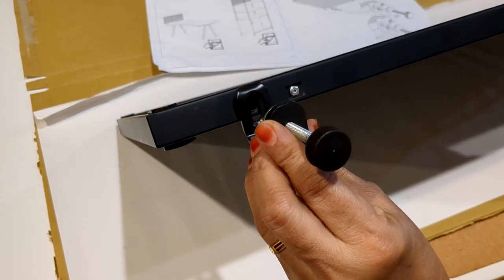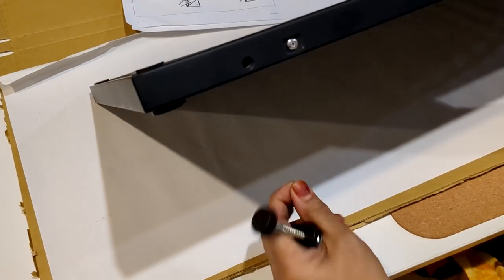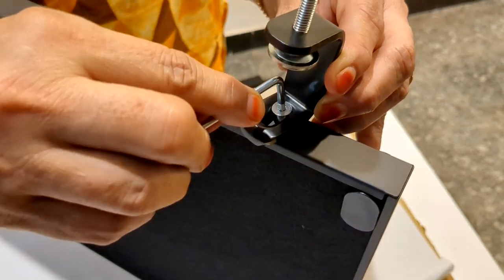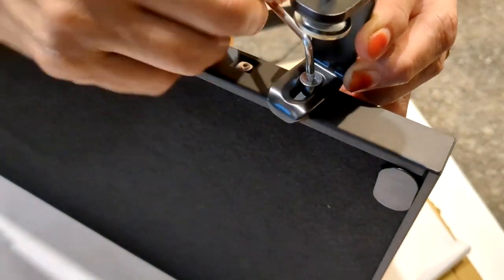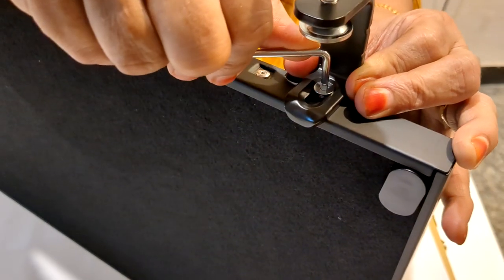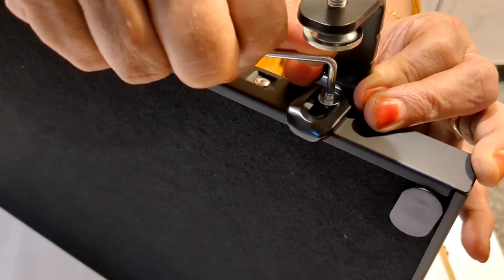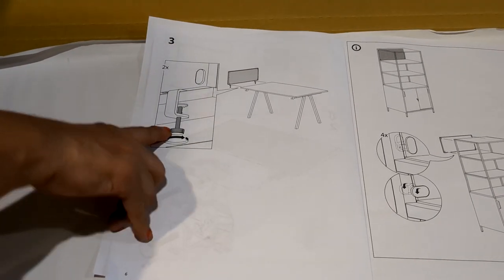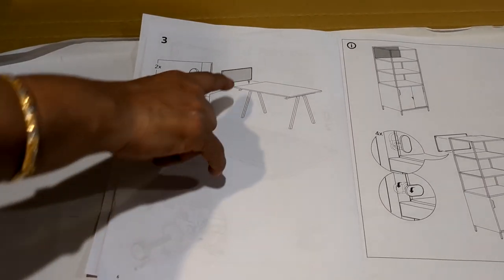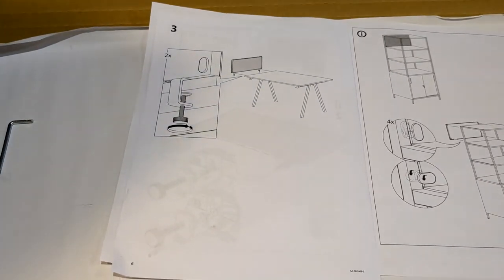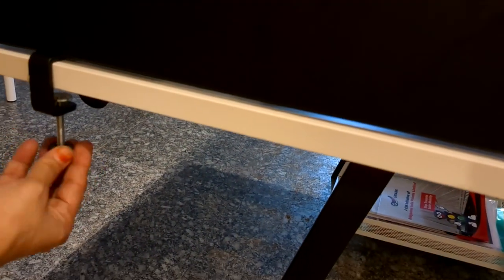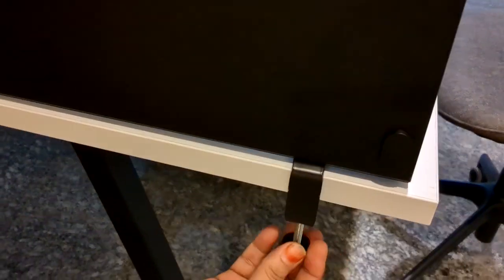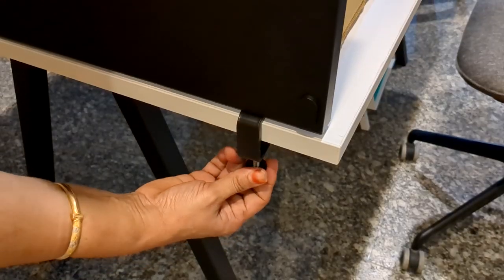So this clamp has to be fixed here like this with the help of this screw provided. So now that we have fixed the clamp, the third step involves fixing of the board on the table, on the desk.